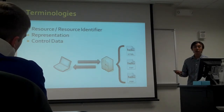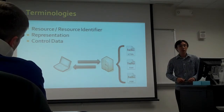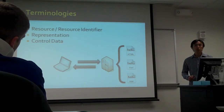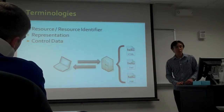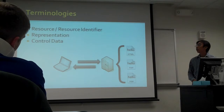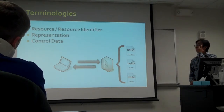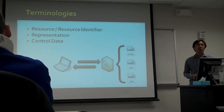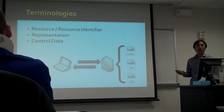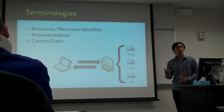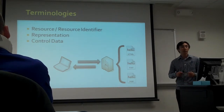The URI is used to identify the resource. Representation is something you get from the resource, but not the resource itself — for example, a web page. Control data defines the purpose of a message. If the value set of a resource consists of multiple representations, content negotiation might be used to select the appropriate representation depending on the message control data.